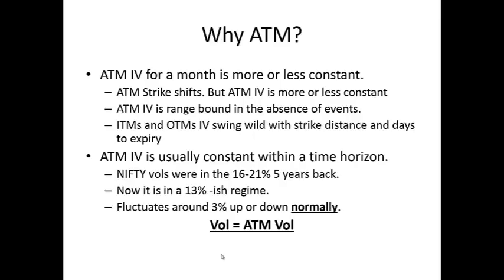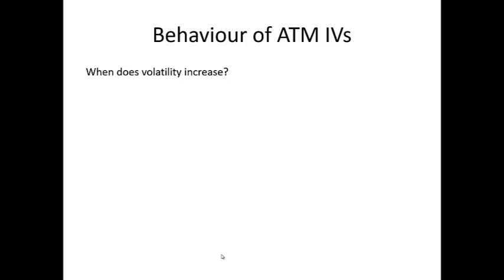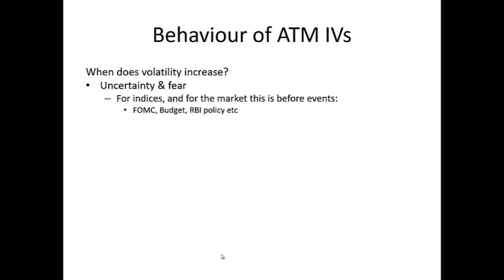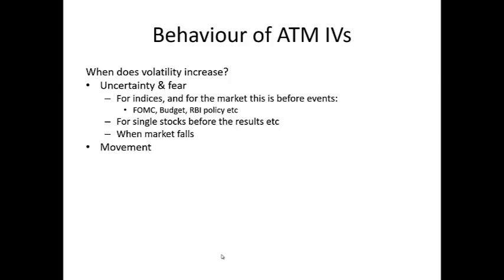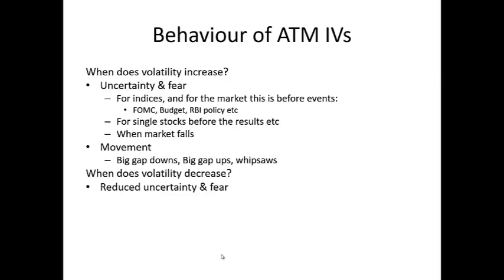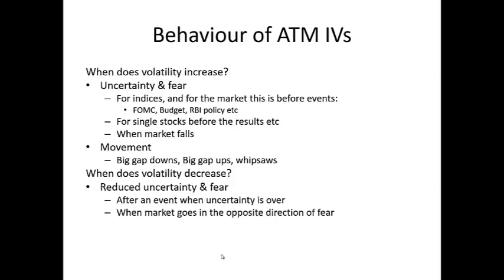When does ATM volatility increase? It increases with uncertainty and fear — for indices, just before events like FOMC, budget, or RBI policy; for single stocks, before results. Also when the market falls, IV increases due to fear, especially in gap-down moves, and when there is large movement such as big gap-ups, big gap-downs, or whipsaws. When does it decrease? When uncertainty reduces — after an event, when the market moves opposite to fear, or when the market slows down or stays still.